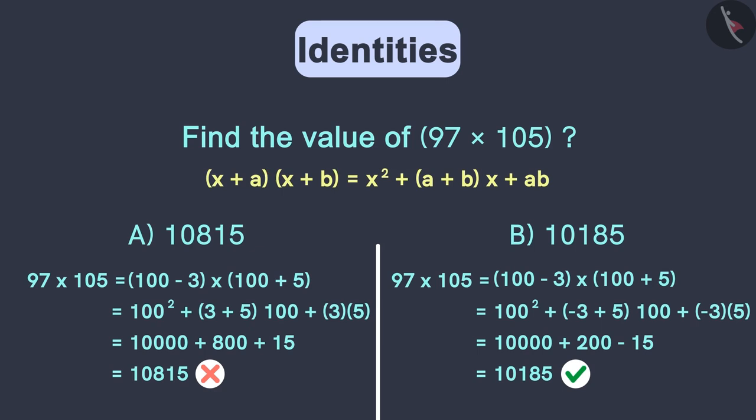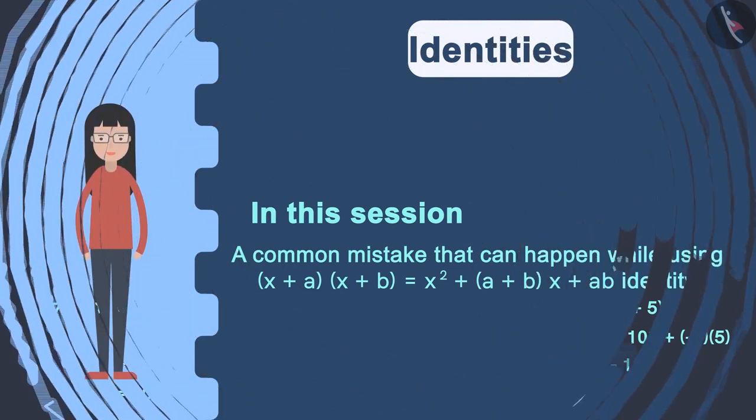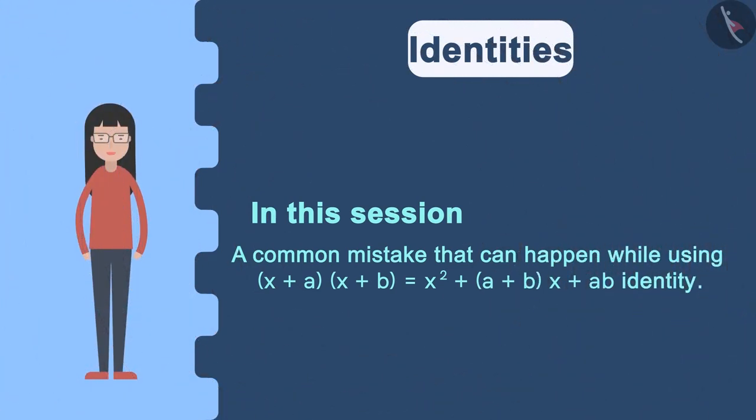Even if there is a plus sign associated with A and B in our identity, that doesn't mean that A and B will always be positive. A and B can also be negative. So in this session, we have seen a common mistake that can happen while using this identity.